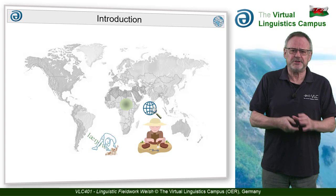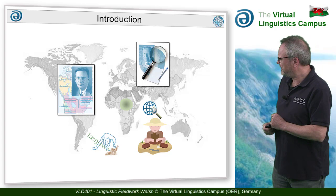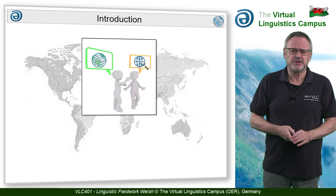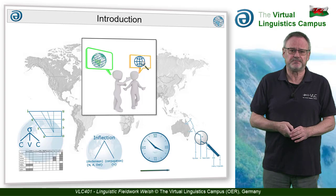A typical empirical approach in the sense of Joseph Greenberg and Edward Sapir. By means of interaction with a native speaker who neither speaks nor understands your language, you want to find out as many details about his or her language as possible.